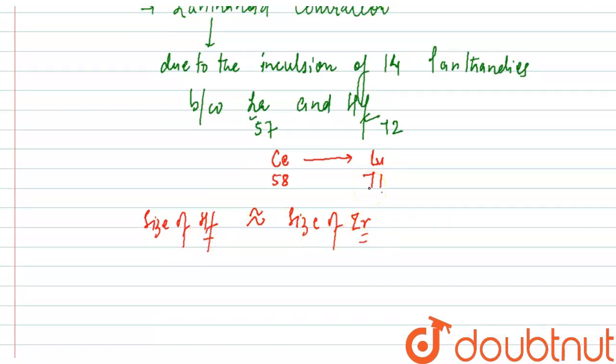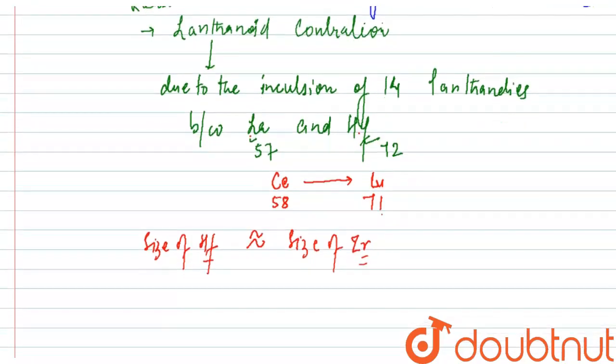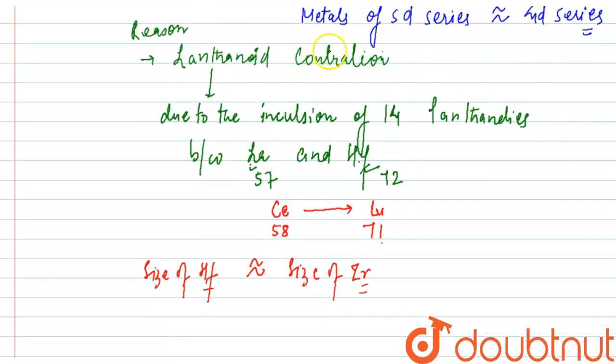because there are 14 elements in between lanthanum and hafnium that are taken out and the other series is made, that is the f-block elements. There we experience the lanthanoid contraction, and due to that reason the size becomes almost equal.